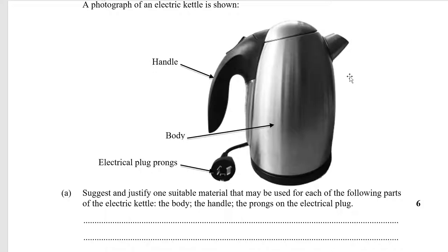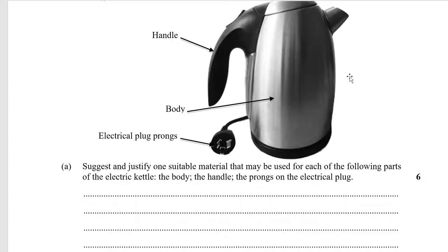A kettle question: justify one suitable material for the body, the handle, and the prongs of the electric plug. The prongs of the electric plug are almost certainly made out of copper — because copper conducts well. The body, based on appearance, is probably stainless steel — it can be cleaned more easily than plastic, has good appearance, and can be easily formed and shaped into the kettle shape.